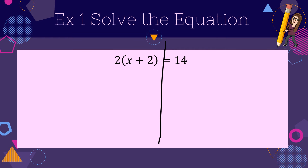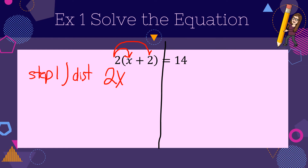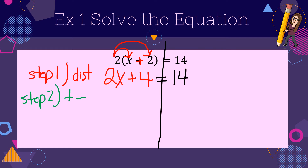Let's follow our steps. Line down the equal sign — it helps us stay organized. Step 1 today is to distribute. So I'm going to distribute that 2 times x, and distribute that 2 times positive 2, which is positive 4. The 14 drops down because we didn't use it. Step 2, as always, is to undo any addition or subtraction. I see that the letter has a plus 4, so I'm going to minus 4. The 2x falls down and I have 10 as my number value.